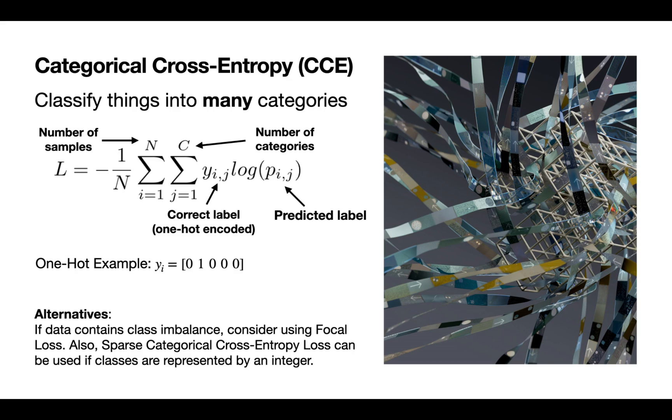Again here, if the data contains class imbalance, we can use focal loss instead. If you don't want to use a one-hot encoding but rather use an integer like category one, category two, category three, we can use the sparse categorical cross-entropy loss.